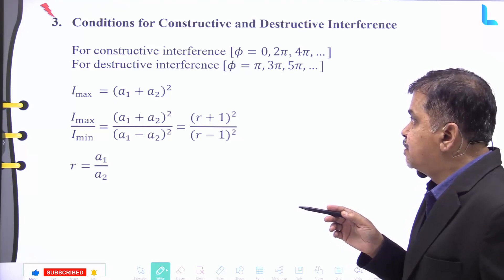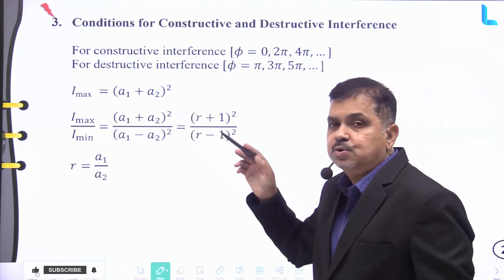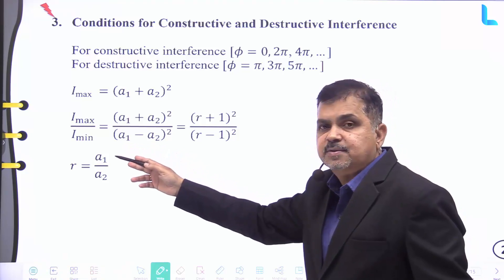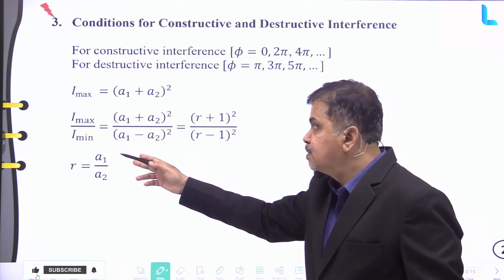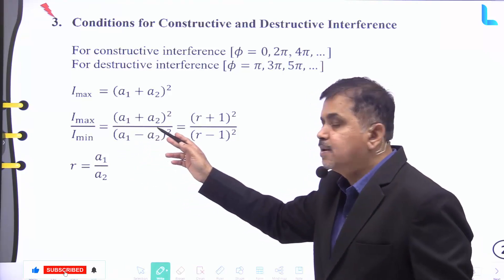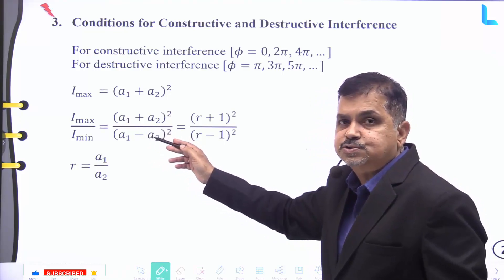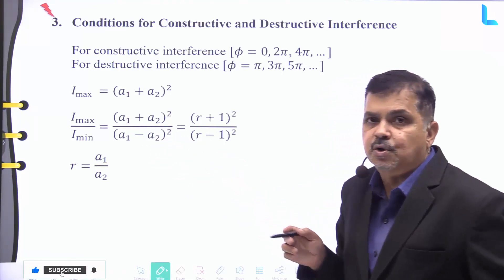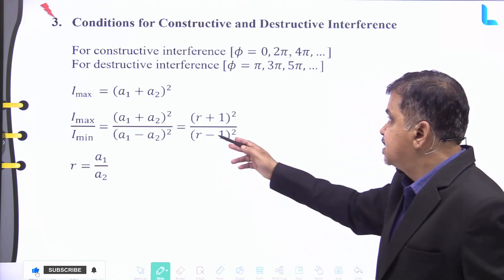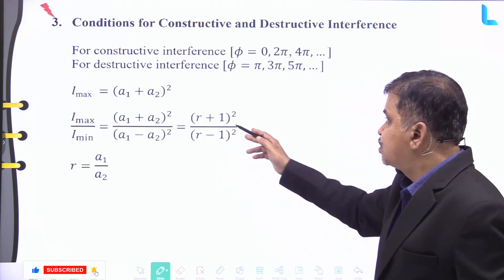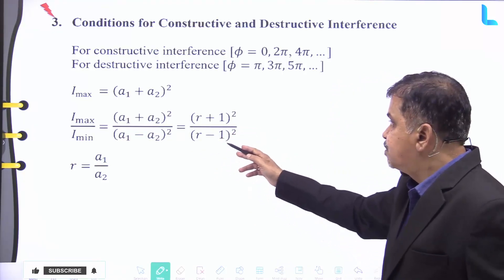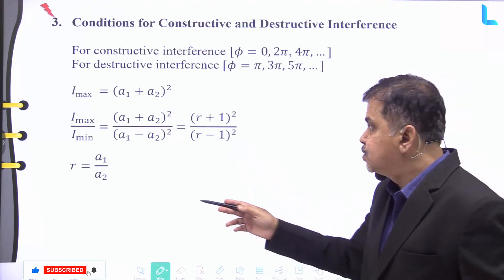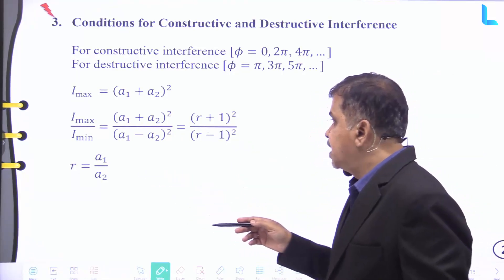I_max = (a1 + a2)², and the ratio I_max / I_min = (a1 + a2)² / (a1 − a2)² = (r + 1)² / (r − 1)², where r = a1 / a2.